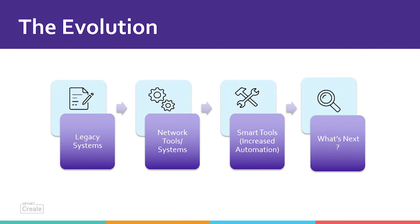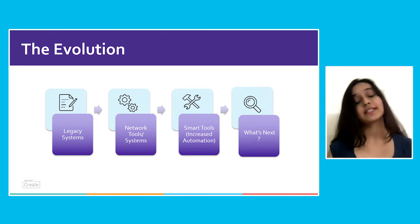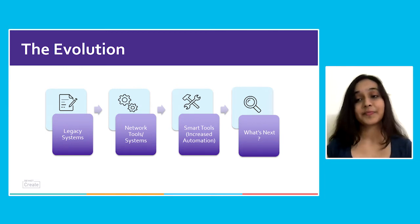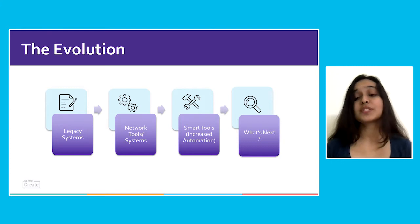I would like to start with the evolution of networks. It all begins with legacy systems, which had old methods and technologies to handle applications and data. It was too slow in performance as well. To overcome this problem, we started developing other networking tools and systems to increase performance and make the network faster and stronger. After that, we started monetizing networks and stabilizing performance using smarter tools, more automation, and more networking.